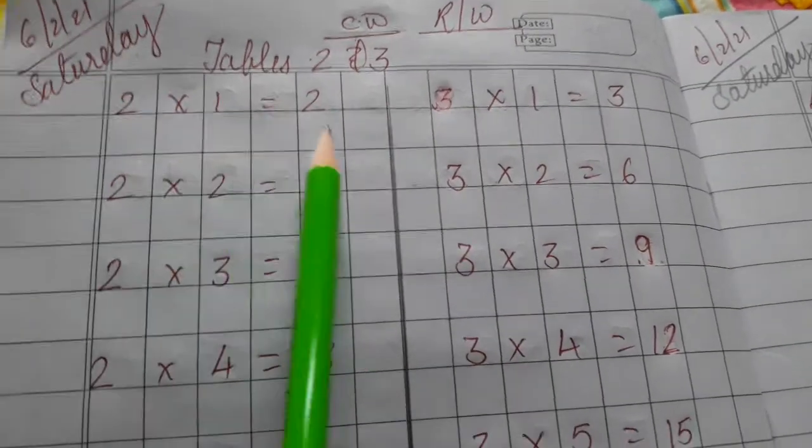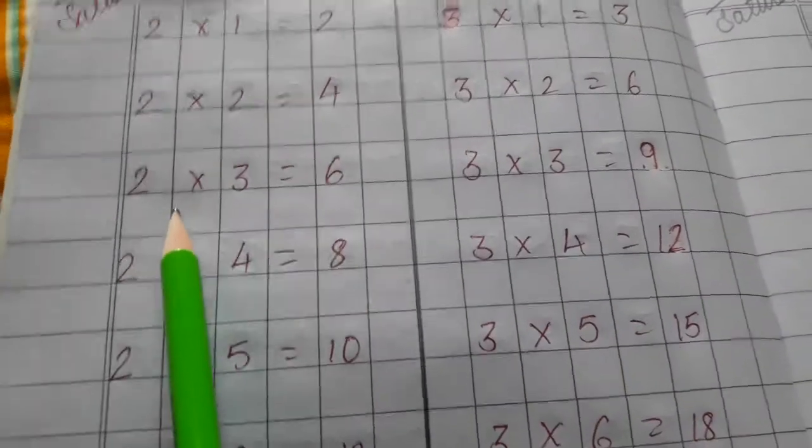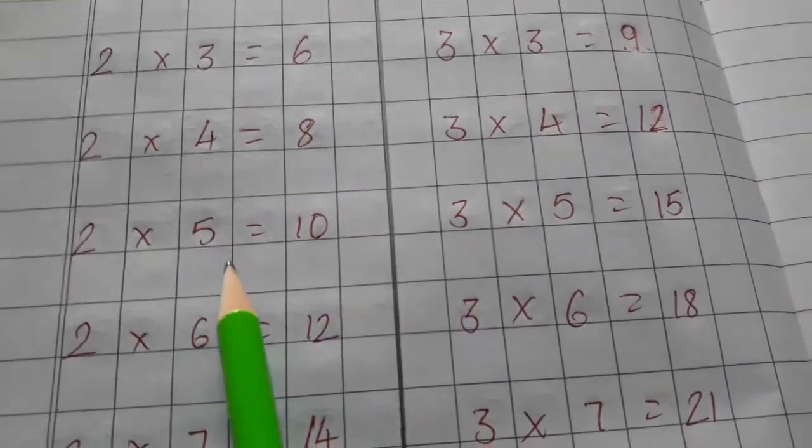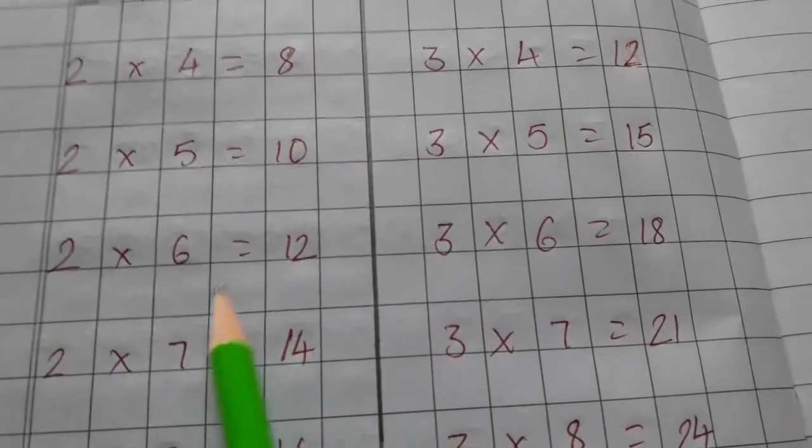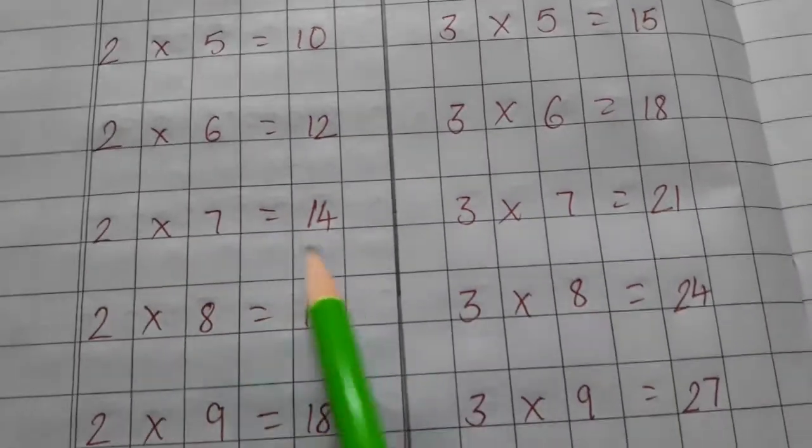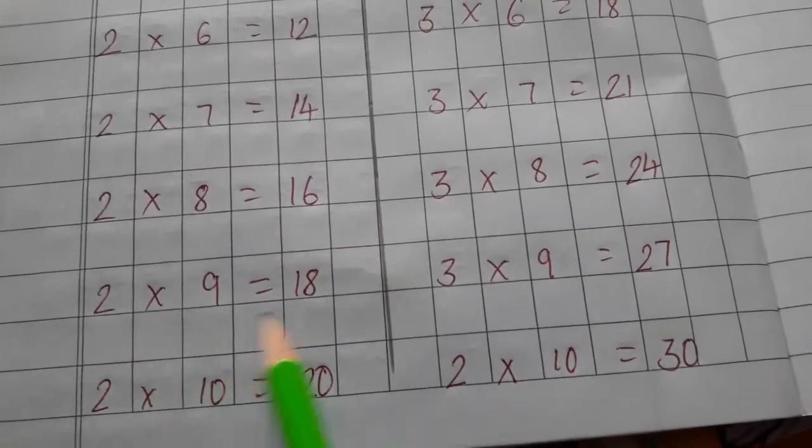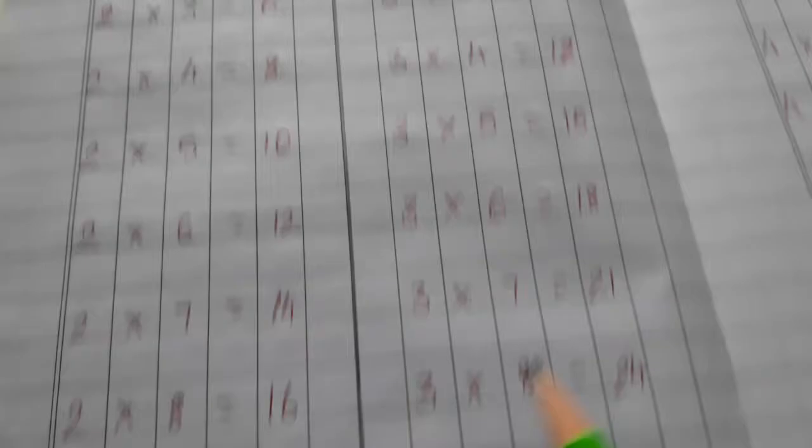2 ones are 2, 2 twos are 4, 2 threes are 6, 2 fours are 8, 2 fives are 10, 2 sixes are 12, 2 sevens are 14, 2 eights are 16, 2 nines are 18, 2 tens are 20.